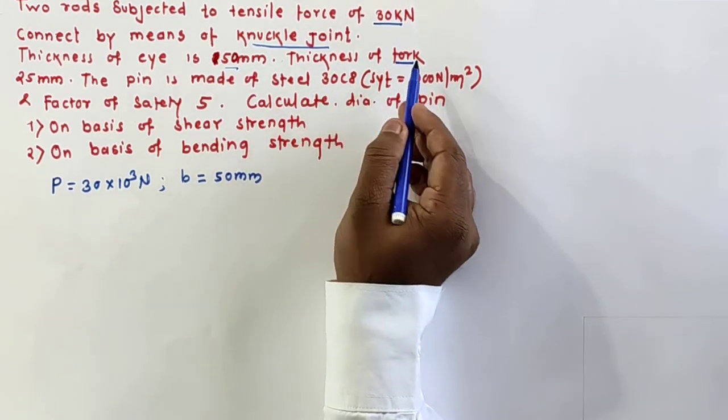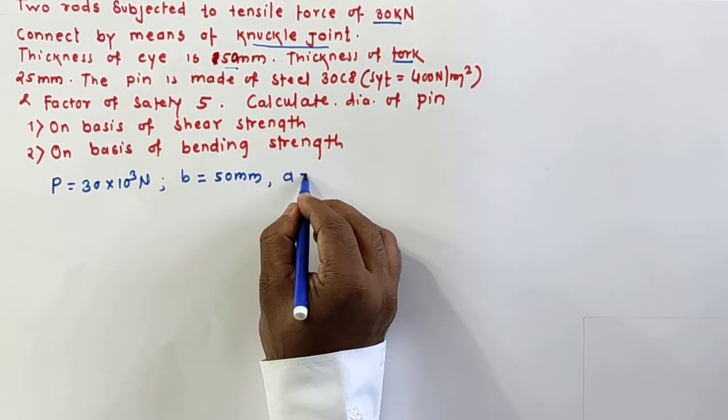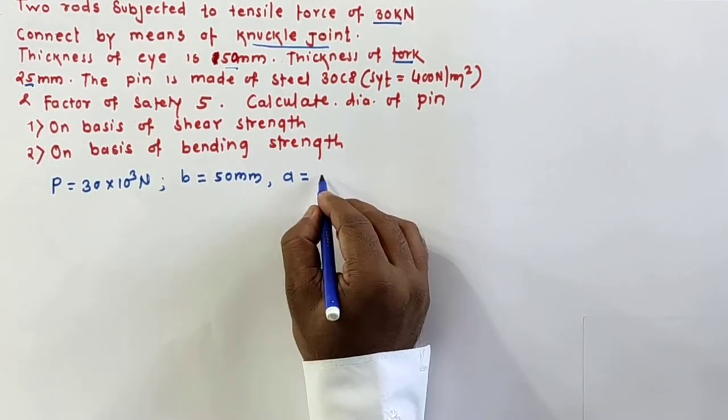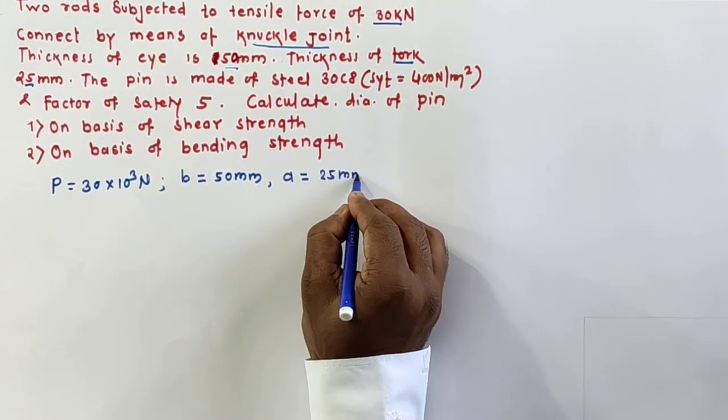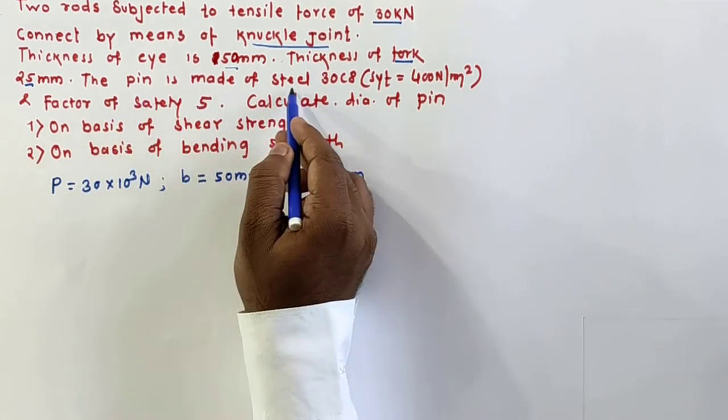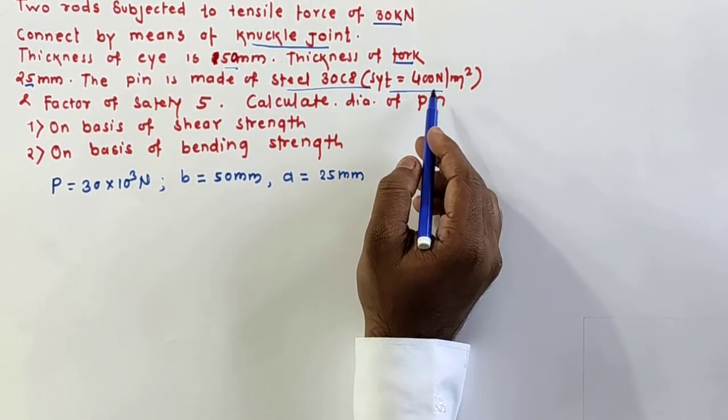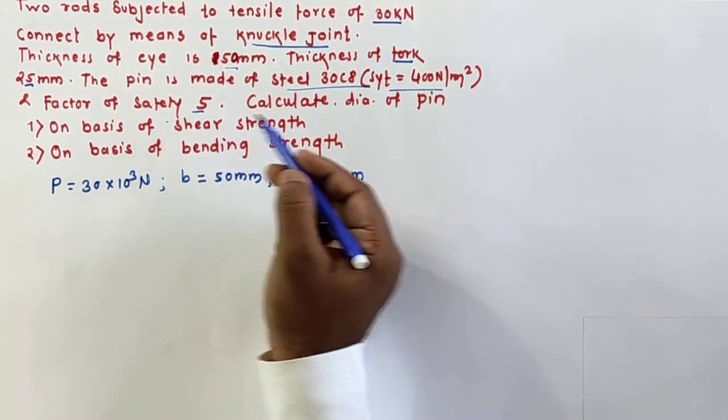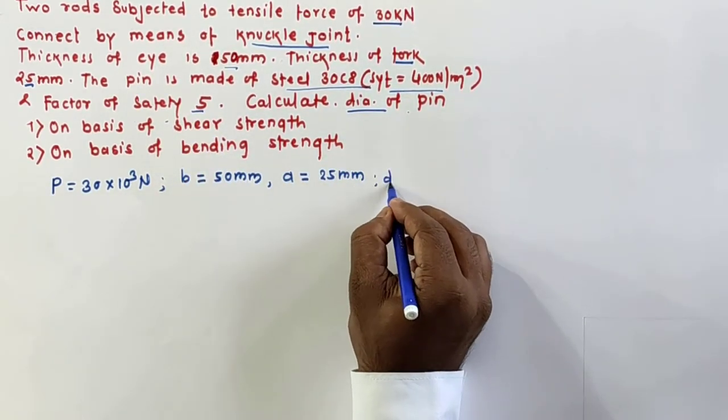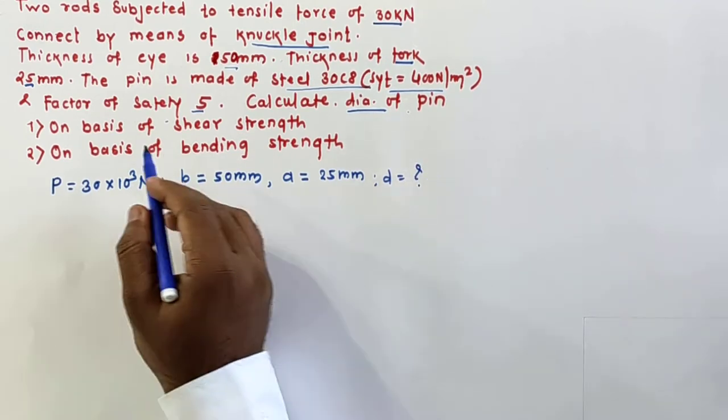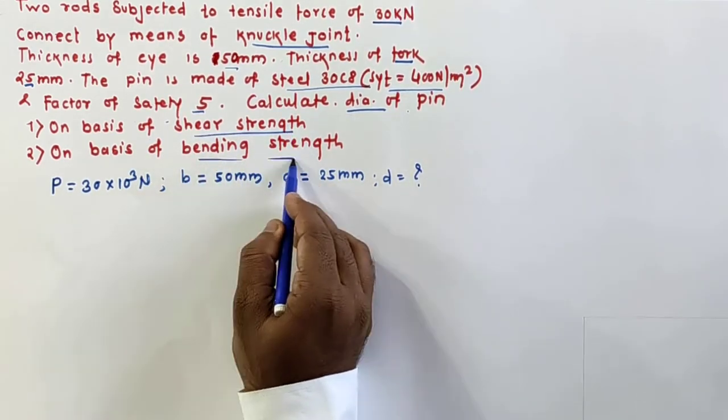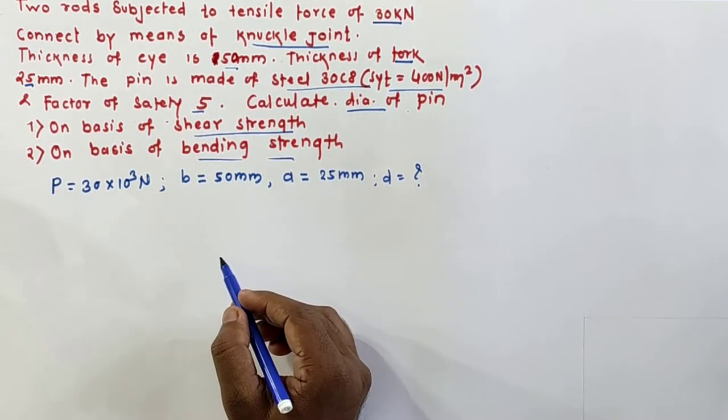Thickness of fork A equals 25 mm. The pin is made up of steel 30C8, yield strength is given 400 Newton per mm square, factor of safety 5. Calculate diameter of pin, so D equals question mark, on the basis of shear and on the basis of bending. Both ways we need to calculate the diameter.